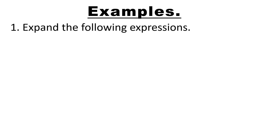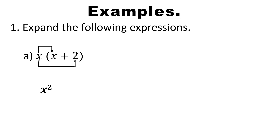Our discussion shall be based on examples. Our first example: expand the following expressions. Part a: x into x plus 2. This means x multiplied by everything inside the brackets — x must be multiplied by x, and x must also be multiplied by positive 2. This is what we call the distributive property. x multiplied by x gives us x squared, then x multiplied by positive 2 gives us positive 2x. That is our answer.